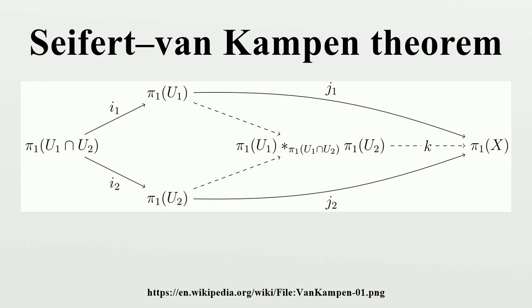Van Kampen's theorem for fundamental groups: Let X be a topological space which is the union of two open and path-connected subspaces. Suppose the intersection is path-connected and non-empty, and let x₀ be a point in it that will be used as the base of all fundamental groups. Then X is path-connected and the inclusion morphisms draw a commutative push-out diagram. The natural morphism is an isomorphism.